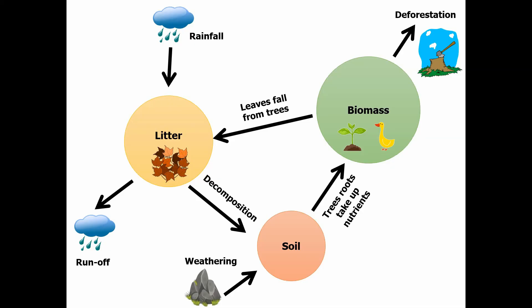The same applies to the soil — we can add nutrients into it. The most common way is through weathering, where rocks very slowly break down into smaller and smaller particles, helping to make up the soil along with the decomposing organic material from the litter. However, we can also lose nutrients from the soil through a process called leaching. Leaching is similar to runoff — when we have very heavy rainfall and the soil becomes saturated, water moving through the soil dissolves nutrients and carries them away.